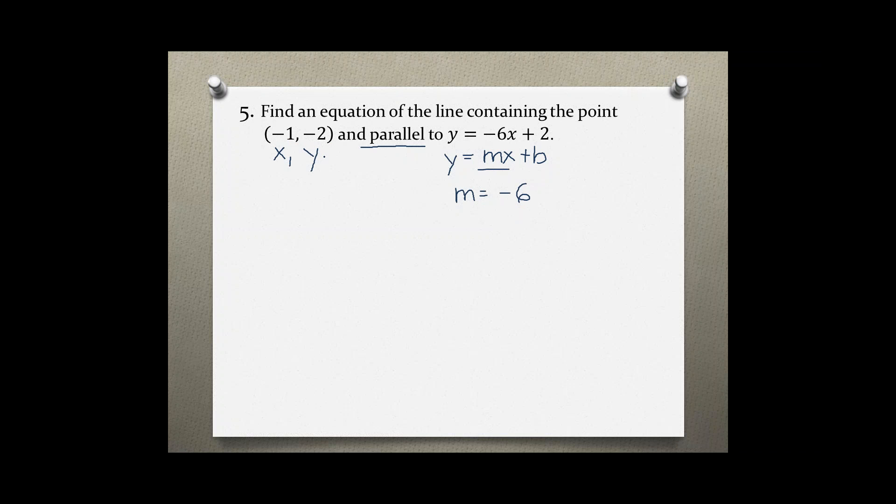And the point-slope form is y - y₁ = m(x - x₁). Plugging in the variables that I already know, I get y - (-2) = -6(x - (-1)).